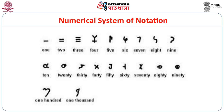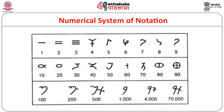Two hundred is expressed by adding a stroke to the right of the symbol for hundred. Five hundred is expressed by adding the symbol of five to the right of the hundred symbol, with both symbols connected by a separate stroke. For four thousand, the symbol for four is placed to the right of the thousand symbol, connected by a separate stroke. For seventy thousand, the symbol for seventy is added to the right of the symbol for one thousand.